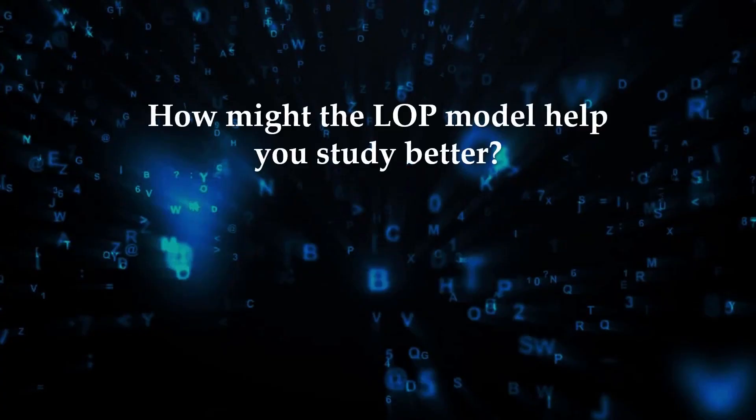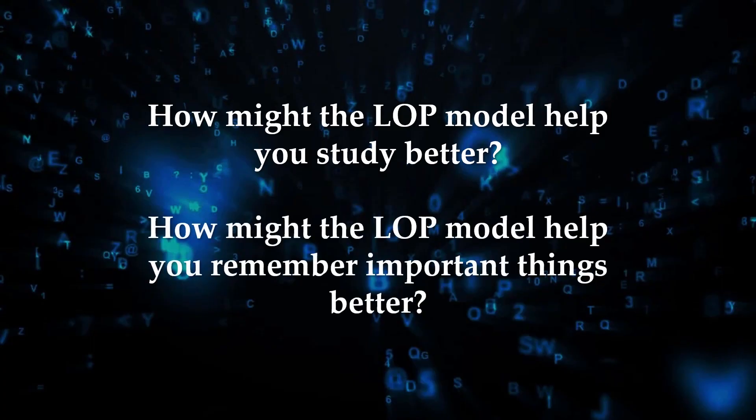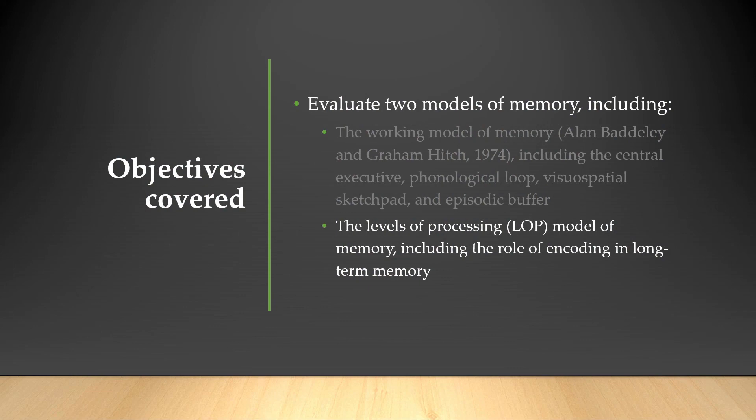I'll leave you with two questions to think about. The first: how might the levels of processing model help you study better? Everything we talked about — deepening your processing, working hard to encode, relating it to yourself — how might that help you study? And the second question: how might the levels of processing model help you remember important things in your life better? There are so many things that compete for our attention and memory, and if this could help you become a better person, why not? That concludes this second extra model of memory. I hope this lesson stays with you.